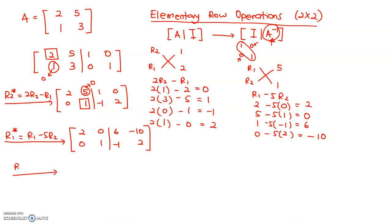So, it's supposed to be 1 over 2 times row 1. So, 1, 0, 6 divided by 2 is 3, negative 10 divided by 2 is negative 5. So, copy down the second one: 0, 1, negative 1 and 2.